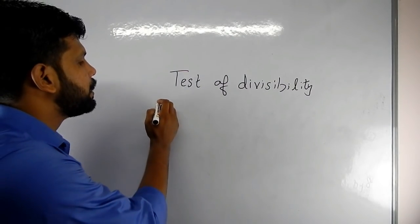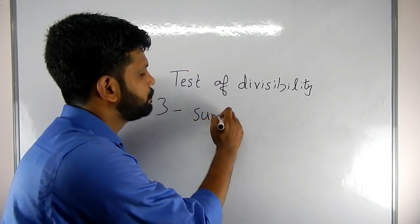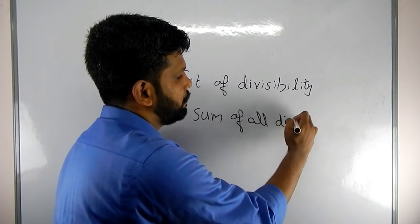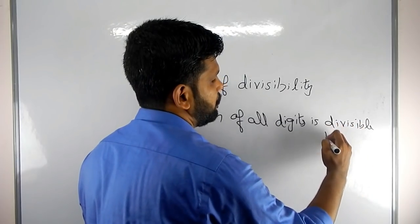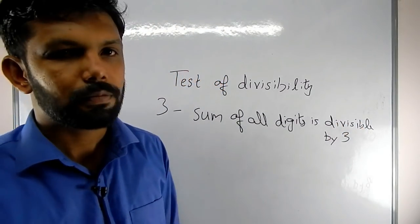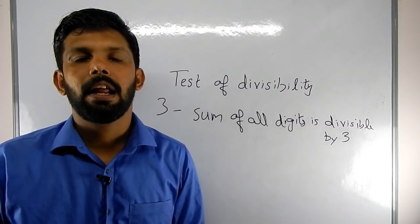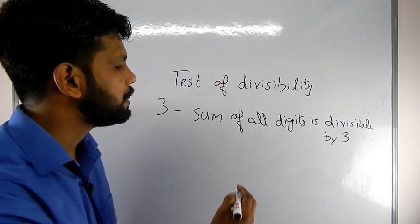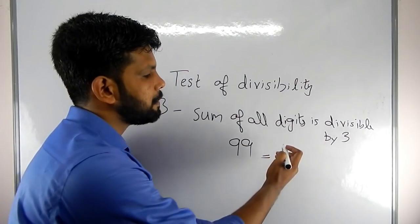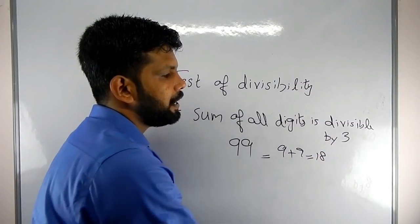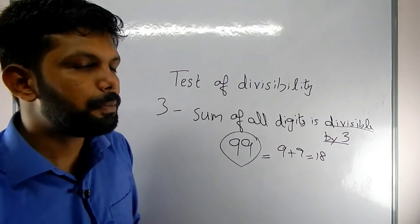Divisibility rule of 3: if you add all the digits of a number and that sum is divisible by 3, then the number is divisible by 3. For example, consider the number 99 — 9 plus 9 equals 18, and 18 is divisible by 3.